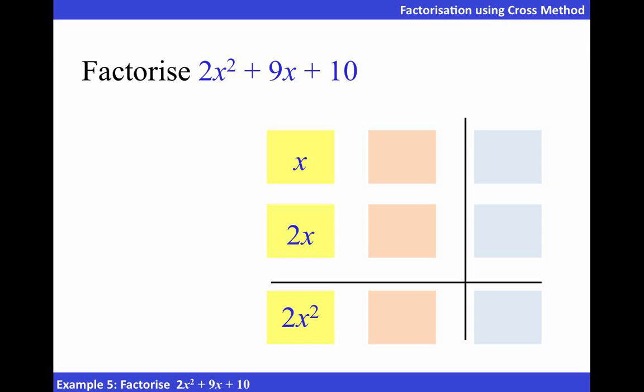Next, let's look at a constant term. There are two possible pairs of factors where multiplied will give us 10. Let's try 2 and 5.